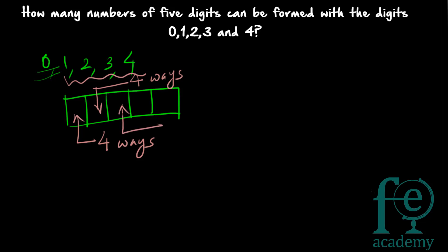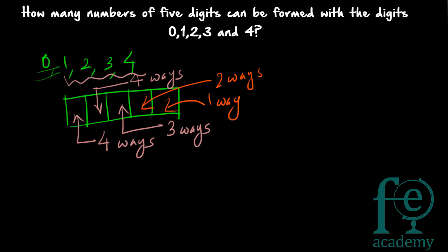For the 100th place: 2 digits are already used, so 3 digits remain — the 100th place can be filled in 3 ways. The 10th place can be filled in 2 ways, and the units place in only 1 way. So the total number of numbers possible is 4 × 4 × 3 × 2 × 1 = 4 × 4 × 6 = 96.